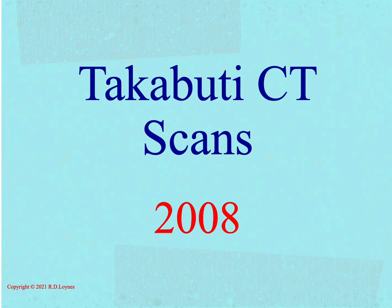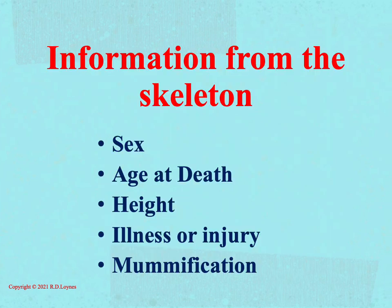In this lecture, I want to consider the skeletal findings from the CT. Although soft tissues are imaged by a CT scan, the skeleton itself can provide a great wealth of information. For example, examination of various characteristics of the skeleton can inform about the sex, age at death, height, and provide evidence of illness and/or injury in some cases. Mummification methods can also be explored, but this will be the subject of a separate lecture.